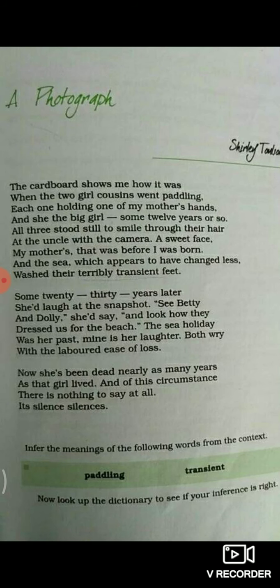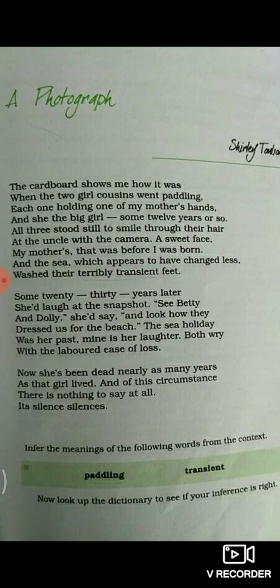Before I start this poem, I want to give you some brief information. The poem 'A Photograph' contrasts the eternal state of nature and the transitory state of human beings. The poet describes a photograph that captures an intense moment of her mother's childhood when she went for a sea holiday with her two girl cousins. The poet draws a contrast between nature changing at a snail's pace and the fast-changing human life.